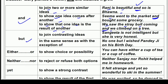Next, 'but' is also a conjunction. It is used to join contrasting ideas — that is, when two sentences are opposite to each other, we use 'but.' For example, 'Sangeeta is not intelligent, but she is very honest.' Sangeeta is not intelligent, but she is very honest — these are two different ideas joined with 'but.'